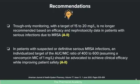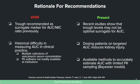The first key recommendation: trough-only monitoring with a target of 15 to 20 is no longer recommended based on efficacy and nephrotoxicity data in patients with serious MRSA infections. The second recommendation: in patients with suspected or definitive serious MRSA infections, an individualized AUC-MIC target of 400 to 600 — assuming a vancomycin MIC of 1 — should be advocated to achieve clinical efficacy while improving patient safety.